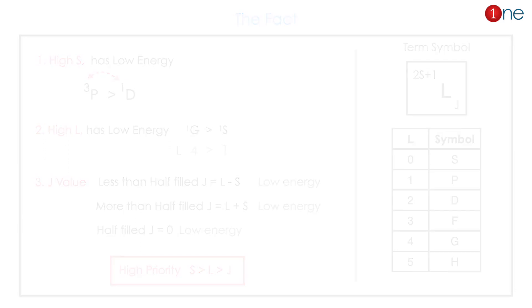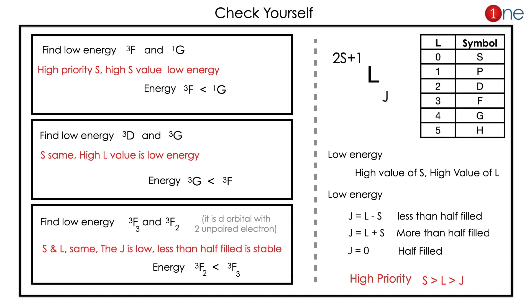Here are given problems to practice yourself. The first one is find the low energy between 3F and 1G. This is straightforward. Spin for 3 is high, so 3F is lower energy.